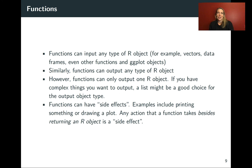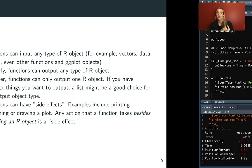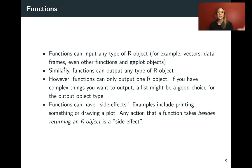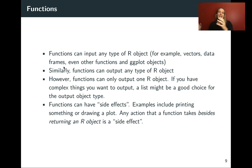A few rules about functions at this stage. First, functions can input any type of R object — vectors, data frames, even other functions, ggplot objects. They can input more than one argument; we've only done one so far, but we'll look at examples with multiple arguments separated by commas. They can also return just about any type of R object. However, they can only return one R object. That's why lists are very popular for functions that need to return a lot of stuff in different formats — the list object lets you put things in as different pieces and send the whole thing out.